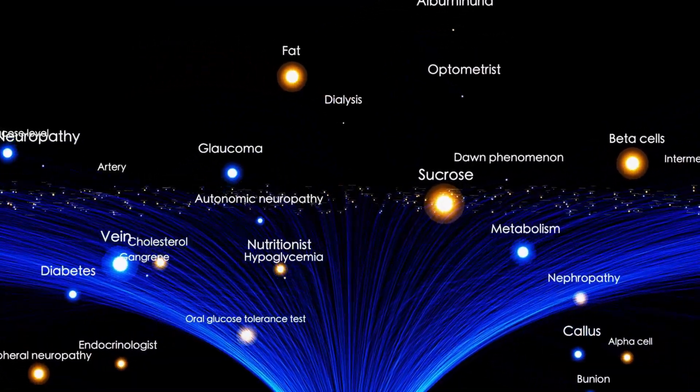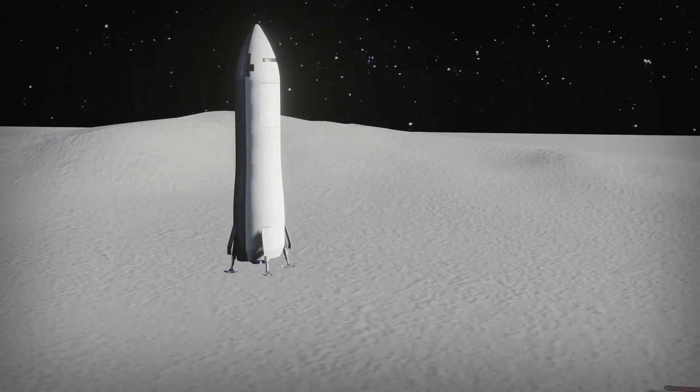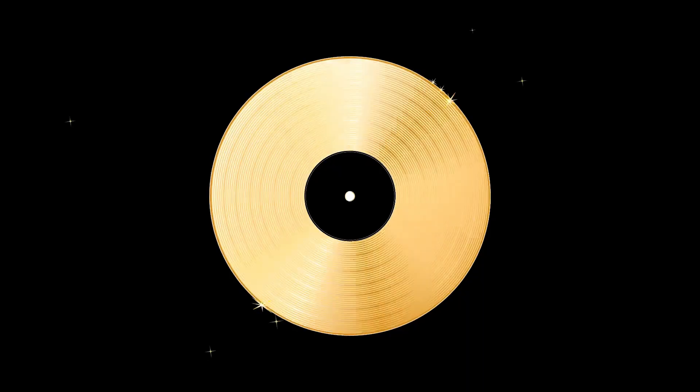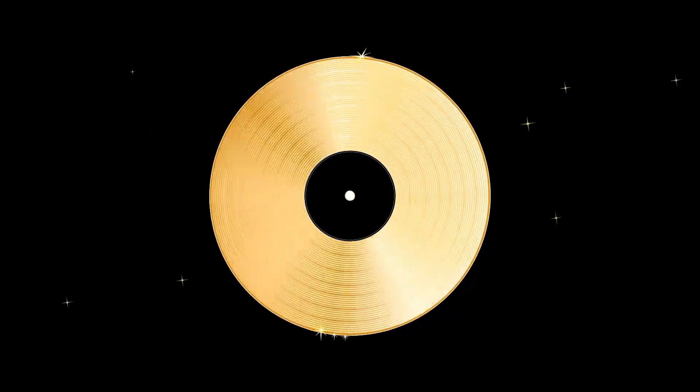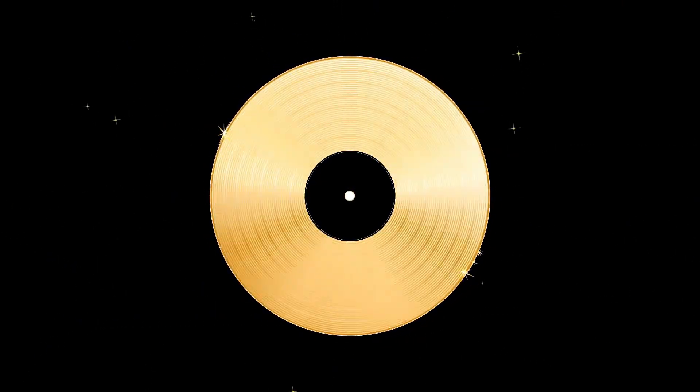Some researchers argue that if extraterrestrial civilizations exist, they might use interstellar regions as corridors for communication or exploration. Could Voyager 1 be passing through such a region, inadvertently picking up signals that aren't meant for us?